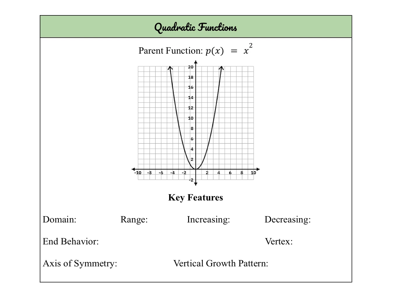So our domain — you can see the arrows on your graph suggesting it goes to the right and left forever. Our domain should always be all real numbers for these types of functions, but our range will be restricted. You can see that our graph physically stops and turns around. So the y values that are included are everything 0 and greater, so 0 to infinity. You can see that our graph is increasing to the right of our vertex, which is at the origin, and it's decreasing to the left of that vertex, so negative infinity to 0.